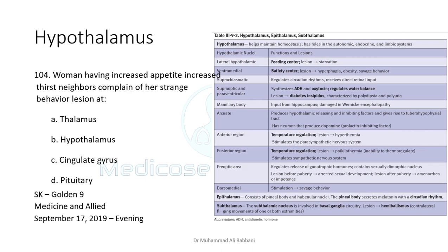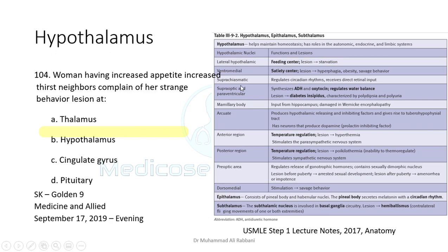Regarding the thalamus: a table in Kaplan Neuroanatomy gives the function of each thalamic nucleus — memorize it. The dorsomedial nucleus is related to memory. Sensory supply of the limbs passes through the ventroposterolateral (VPL) nucleus. Sensations of the head and neck pass through the ventroposteromedial (VPM) nucleus. One important nugget: all sensations pass through the thalamus except olfaction.